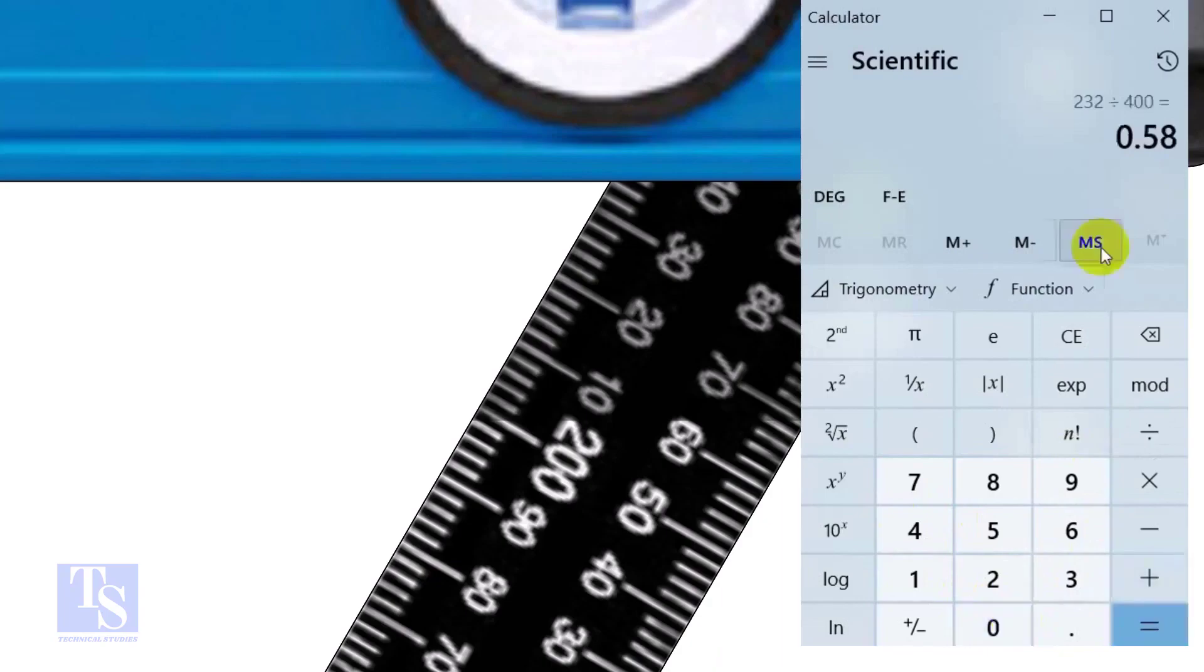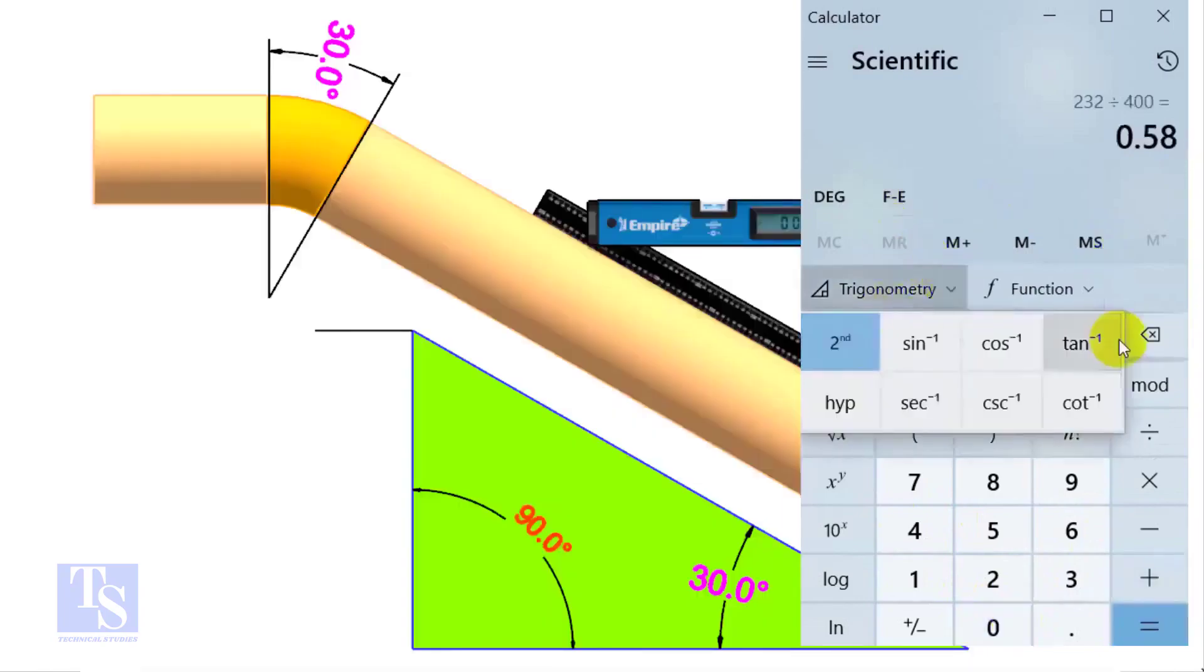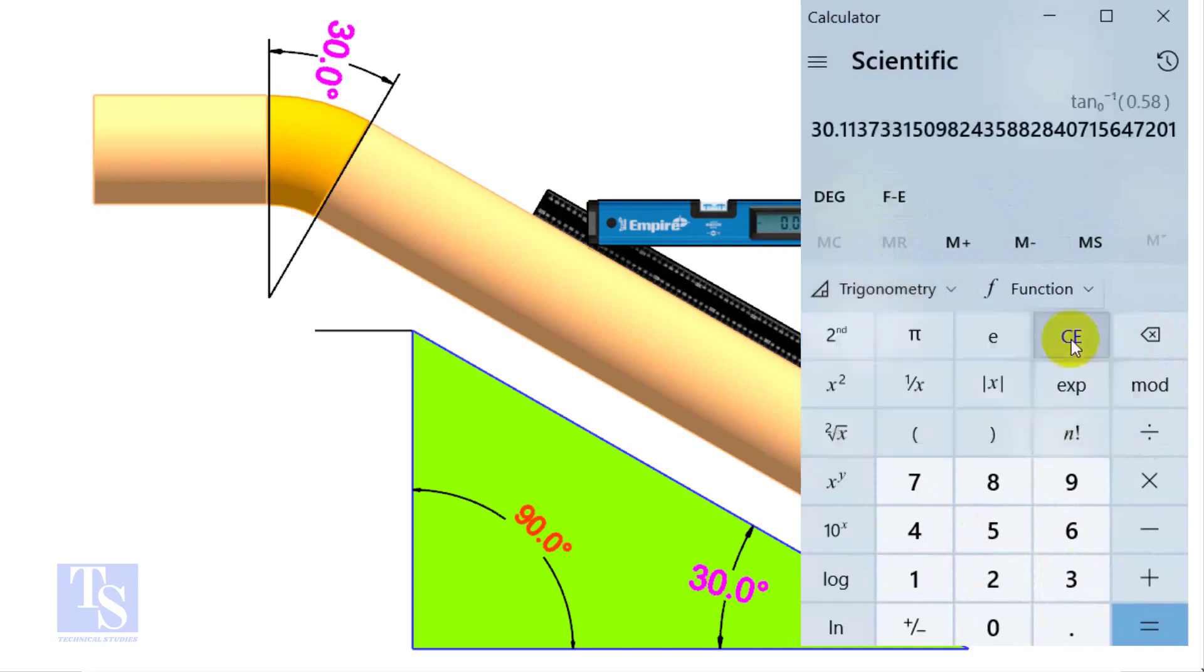Divide 232 by 400, then apply inverse tangent. If you round the figure, the answer is 30 degrees.